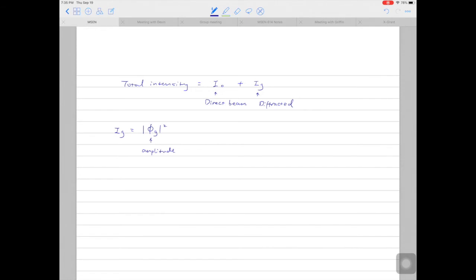Let's continue with the expression. So phi G square is equal to pi T divided by xi G square multiplied by sine square pi T s effective.